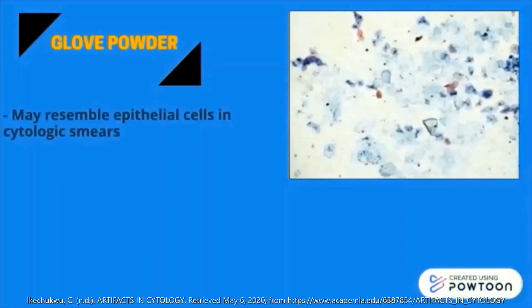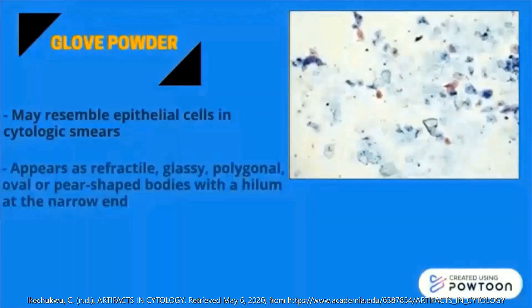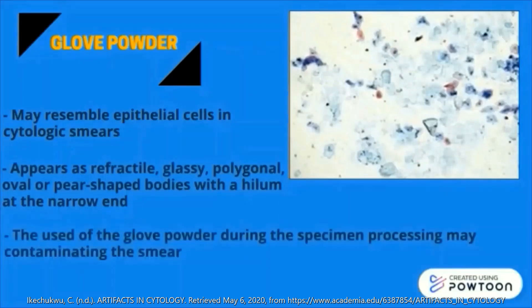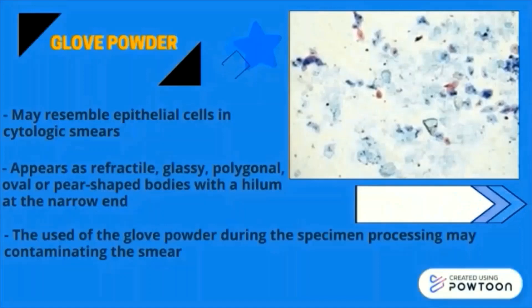Glove powder may resemble epithelial cells in cytologic smears. It appears refractile, glassy, and polygonal with a hilum at the narrow end. The use of glove powder should be avoided because it may contaminate the smear.